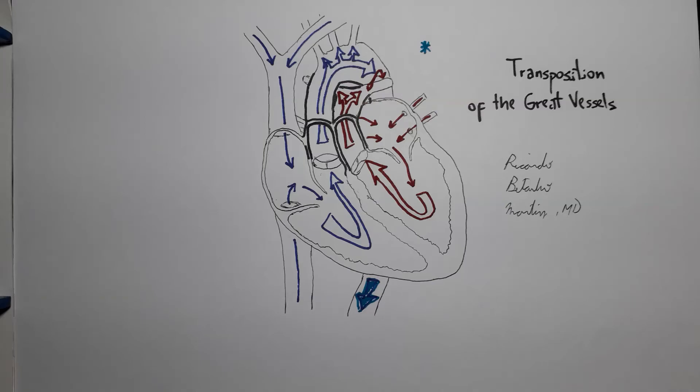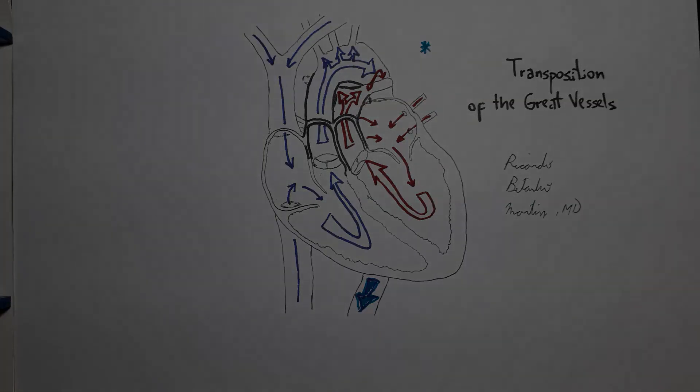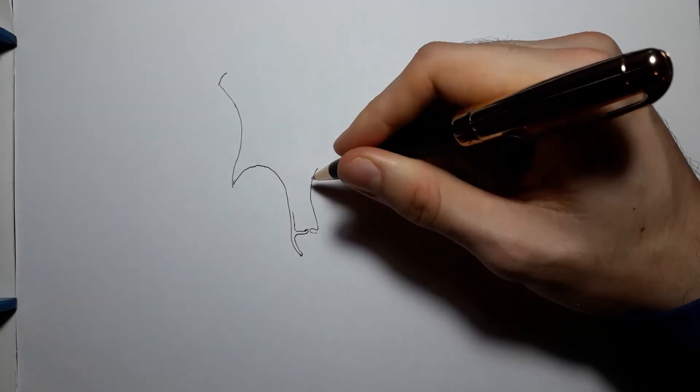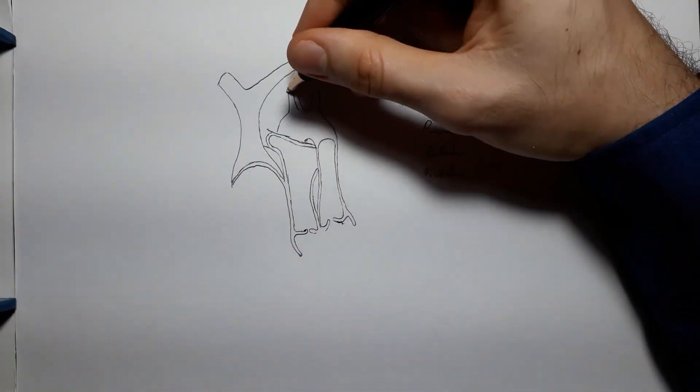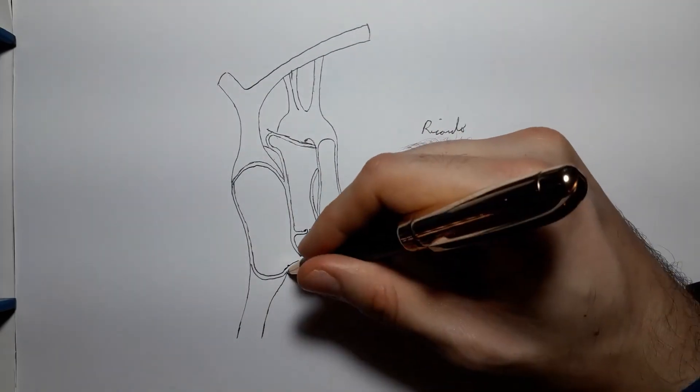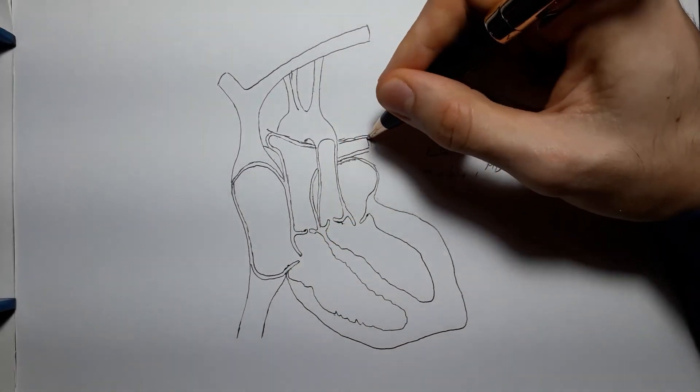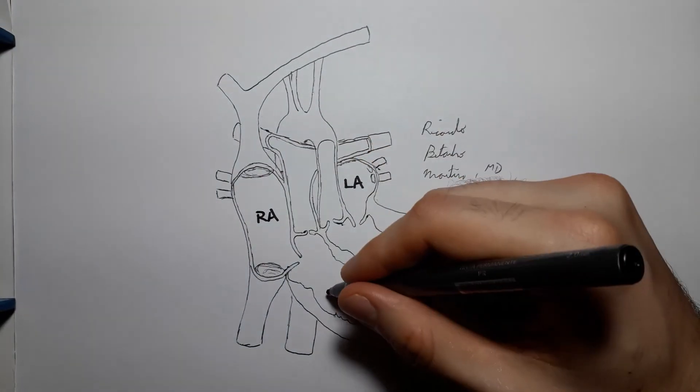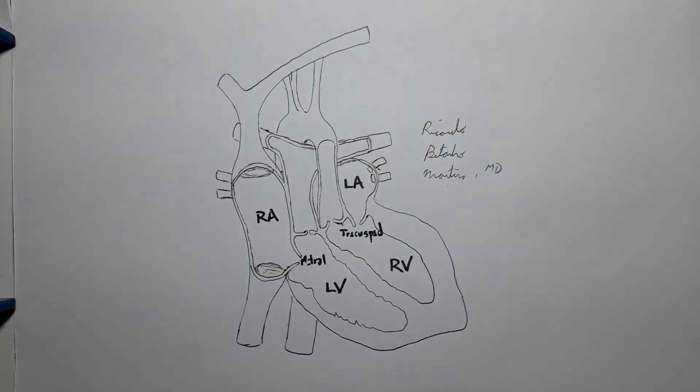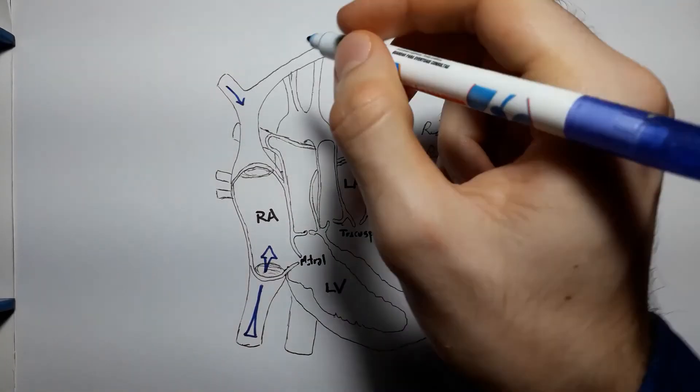Well, dextro-transposition of the great arteries means that we are talking about this specific condition in which the aorta arises from the right ventricle and the pulmonary trunk from the left ventricle. Levo-transposition of the great arteries or L-transposition is a different condition that may warrant its own video.